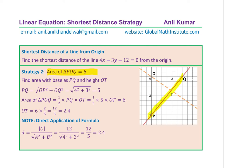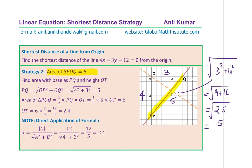We can also find the area using PQ as the base and OT as the height. The length PQ, using the Pythagorean theorem with sides 3 and 4, is the square root of 9 plus 16, which equals 5 — a 3-4-5 right triangle. Once PQ is found as 5, the area of triangle OPQ equals half of PQ times OT, so 6 equals half of 5 times OT. Rearranging, OT equals 12 over 5, which equals 2.4. So we get the same answer with this much simpler calculation.